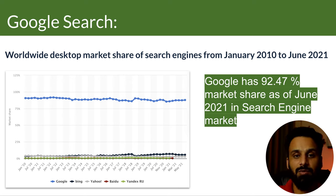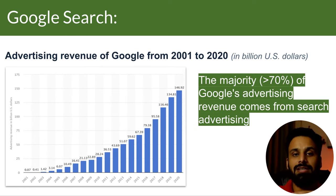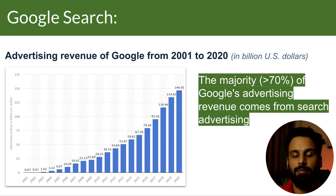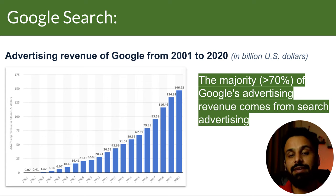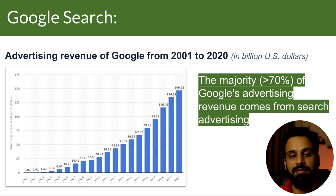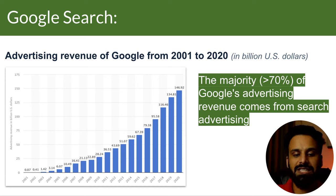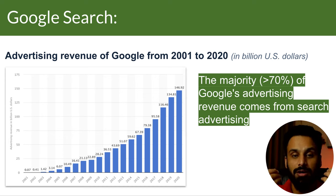When 90% of search volume is controlled by Google, that's pretty much it. Google is a giant and one of the top five biggest companies in the world. As per Google's stats, more than 70% of their revenue comes from Google Ads. The advertising revenue generated by Google last year was 146 billion dollars, and for the last 10 years it has been continuously rising. Such a big company — 70% of their revenue comes from Google Ads.